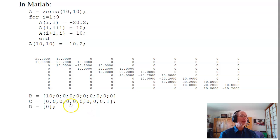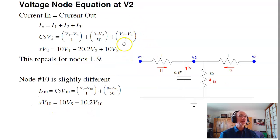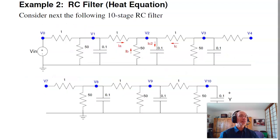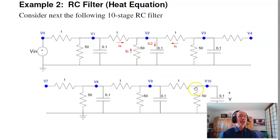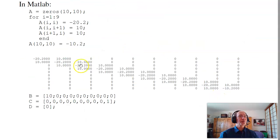Input the B matrix, C matrix, D matrix, and so on. The B matrix comes from the fact that the first node is attached to V0 and nobody else is, so I get an input matrix for node 1. The C matrix is: of those 10 voltages, which one am I looking at? In this case, my output is node 10. So there's my C matrix.